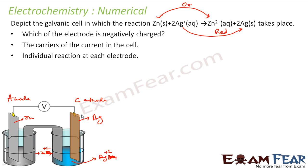Since electrons flow from the zinc side to the silver side, the zinc electrode gets a negative charge and the silver electrode gets a positive charge. Please note: you cannot blindly say the anode is negative — you have to determine it from the reaction. In this case, zinc is losing electrons, so the zinc anode is negatively charged.